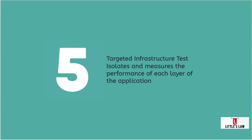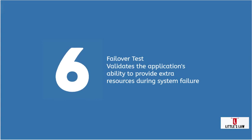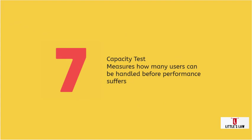The targeted infrastructure test isolates and measures each layer or component of the application to test its performance. The failover test validates the application's ability to provide extra resources and move to a backup system in the event of a server or system failure. The capacity test measures how many users the application can handle before performance starts to suffer during load testing or real-time scenarios.